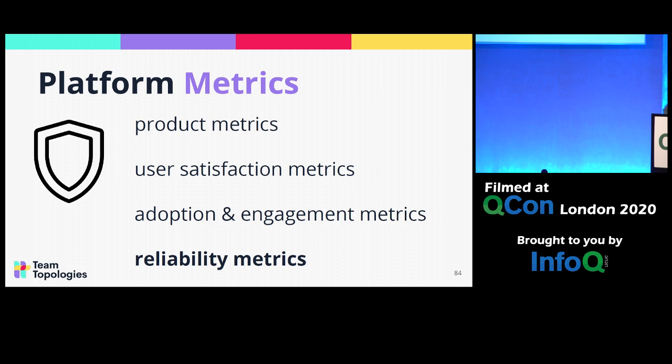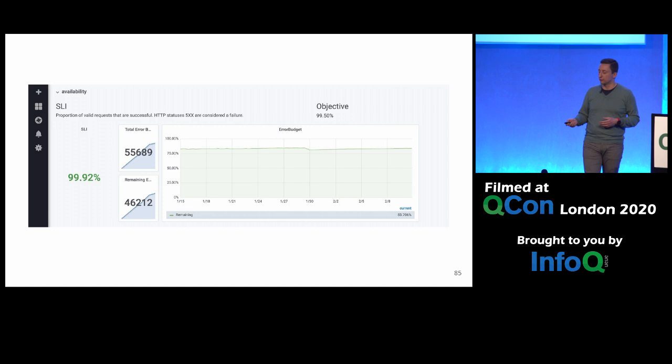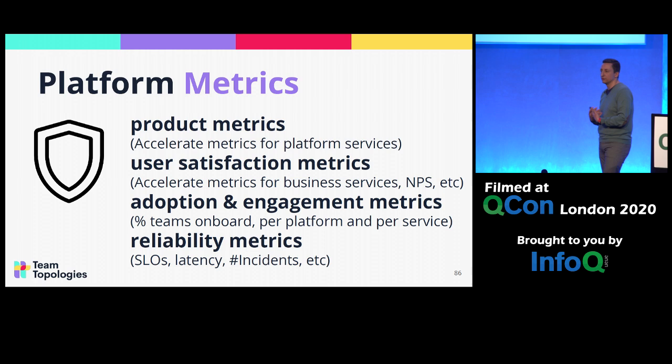Finally, the reliability of the platform itself is quite important — as in the uSwitch example, they had their own SLOs for the platform, available to all teams. These are just examples; in your own context you might have different metrics, but the types and categories we should look at should be more or less the same.